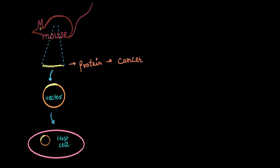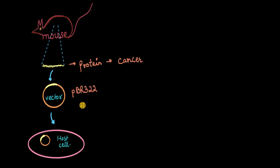Bacteriophages and plasmids are the two things commonly used as vectors, and the most widely used plasmid vector is pBR322. pBR322 is one of the first and most widely used plasmid vectors. In this video, we will understand the significance of each part of this vector and how we incorporate the gene of interest inside it.